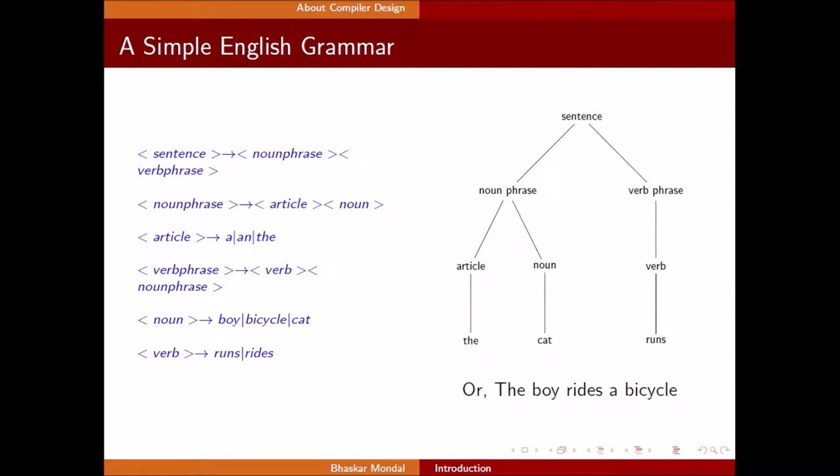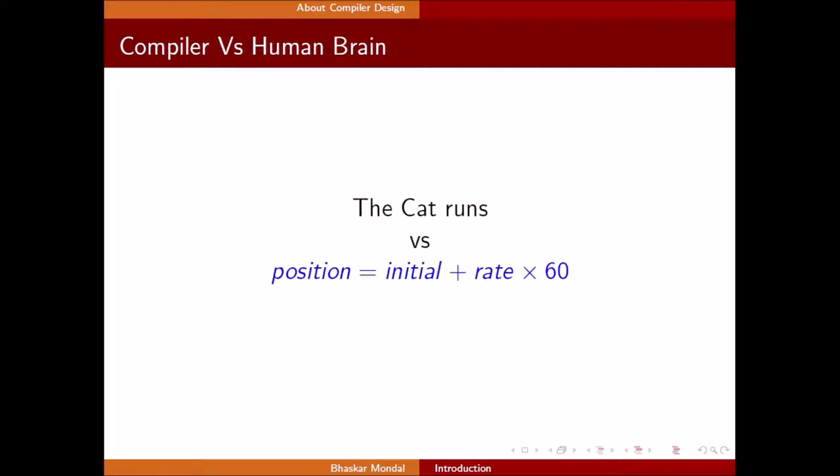So sentence. The tree will look like this: noun phrase, verb phrase. Noun phrase may have article and noun. Article may be The, noun may be cat. And verb is runs. So according to this grammar, our sentence is correct. It is in proper format. So we understand it.